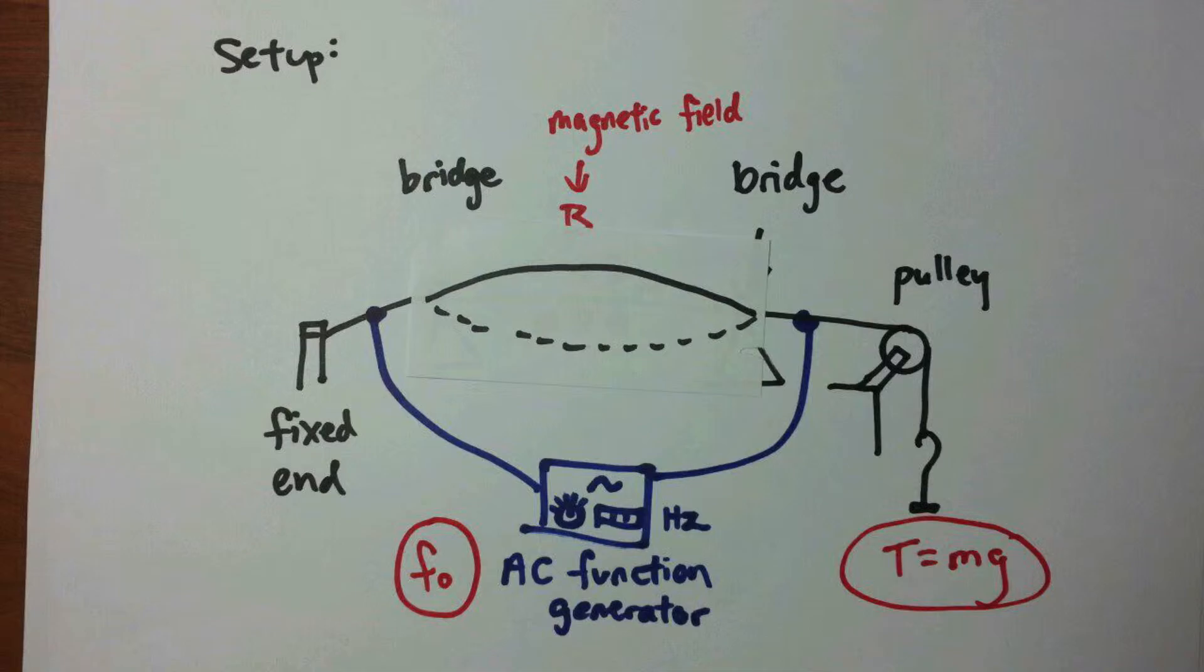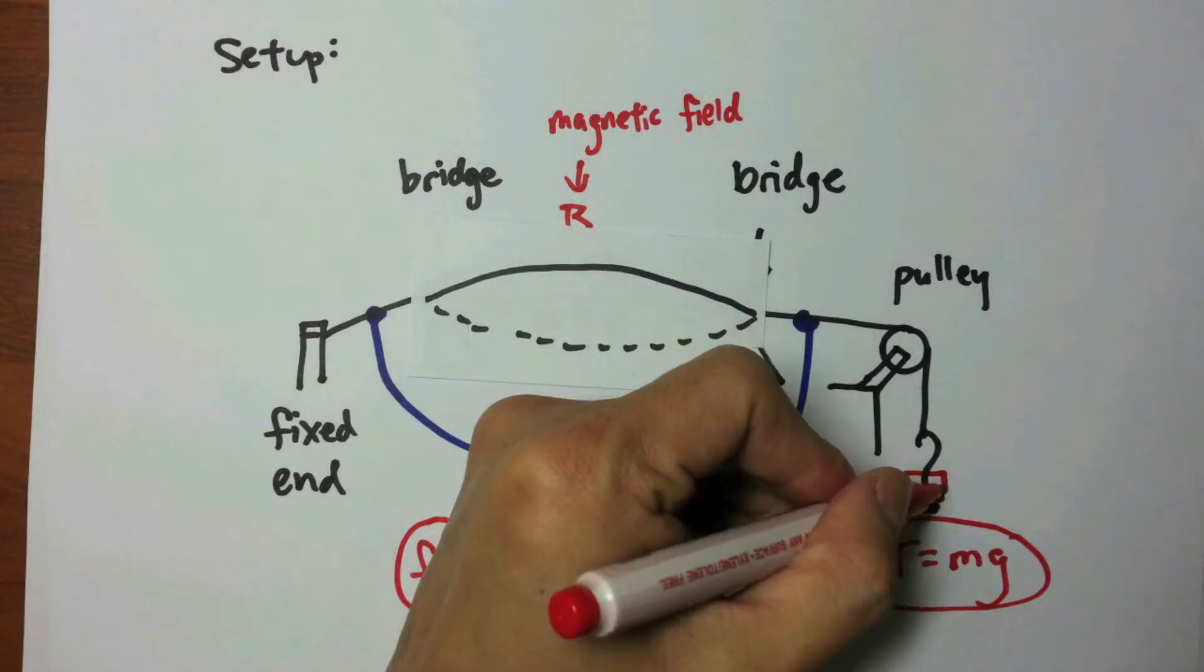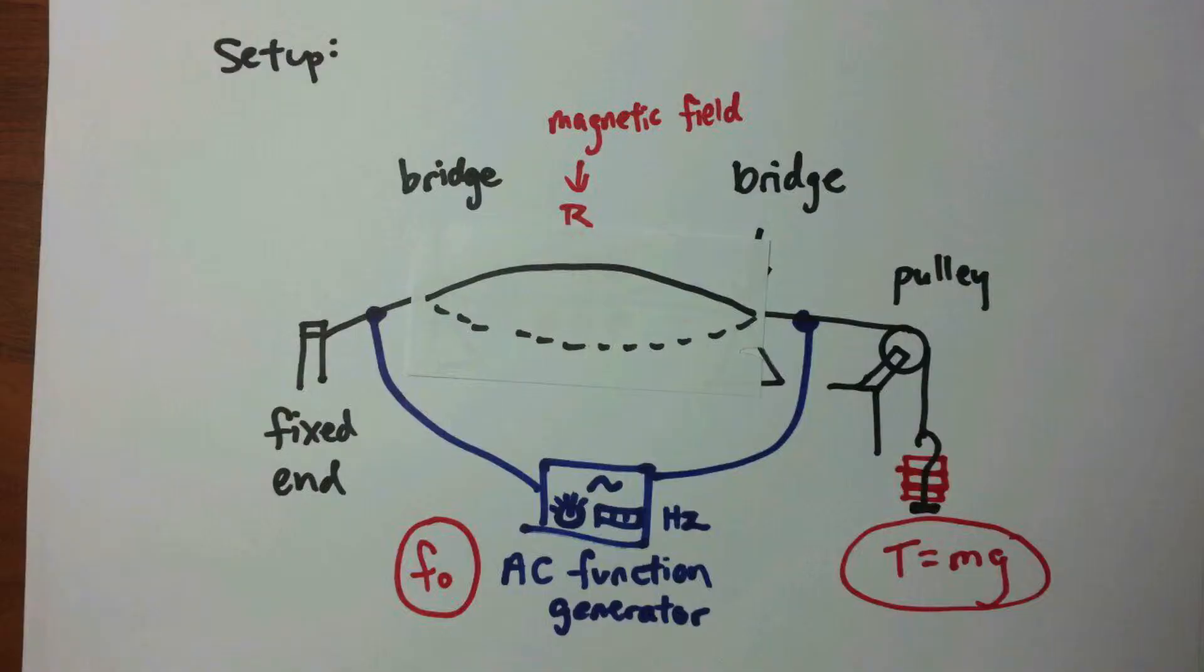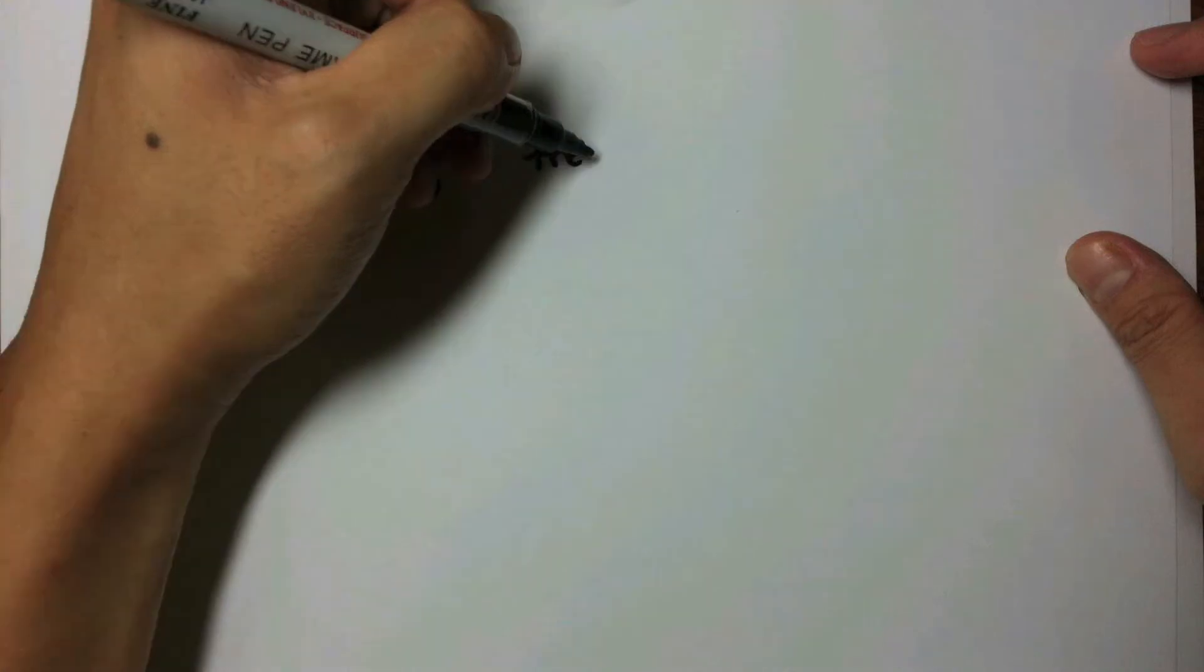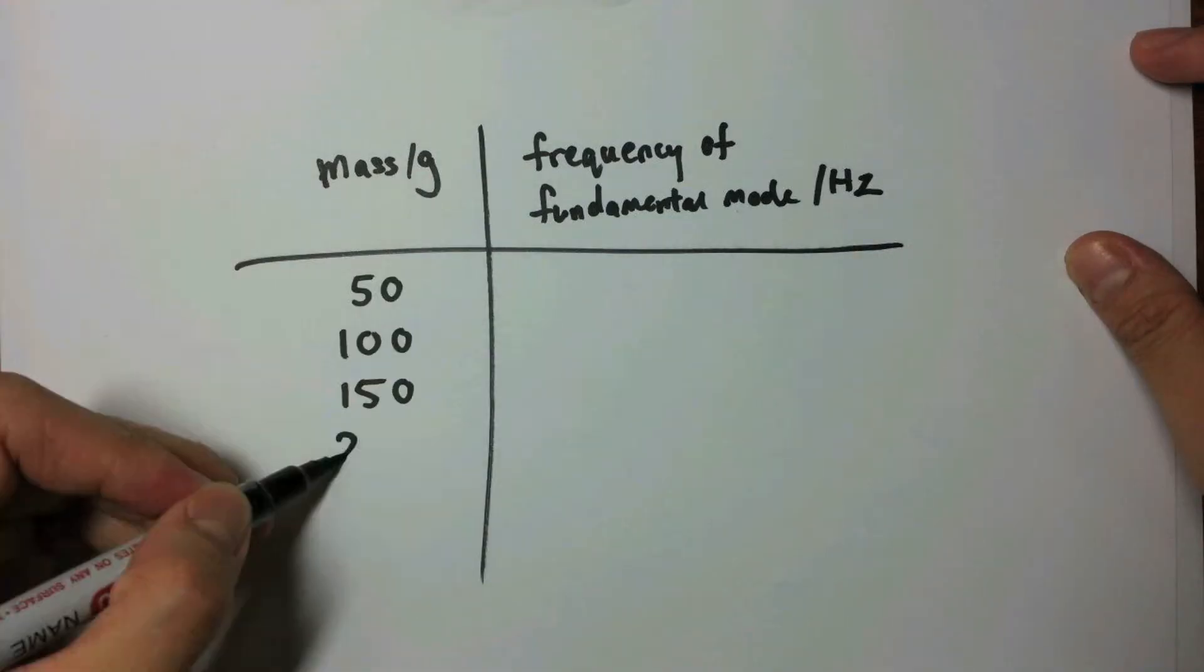We shall repeat the experiment for different values of M by adding known values of mass, for example 50g increments each time onto the mass hanger. All the values for the mass M and resonant frequency for the fundamental mode F0 should be recorded and tabulated.